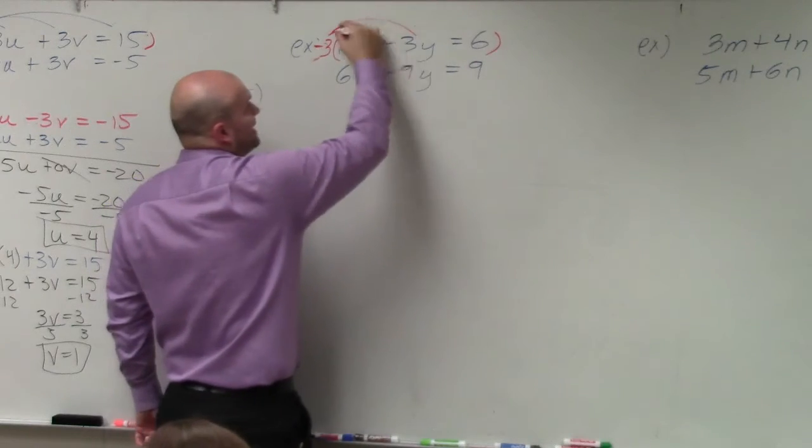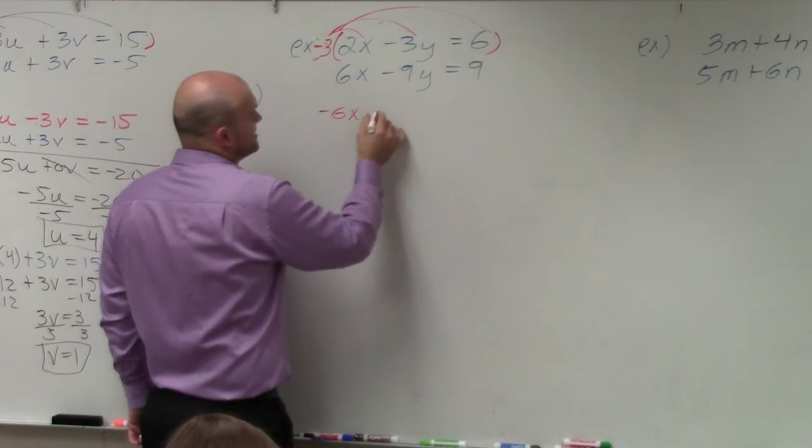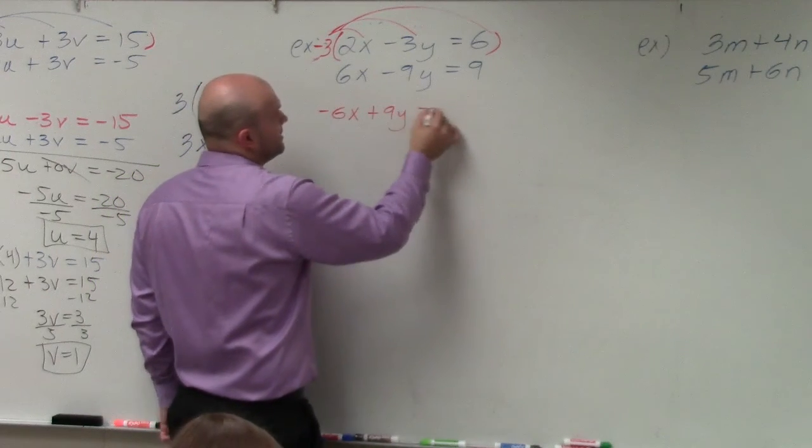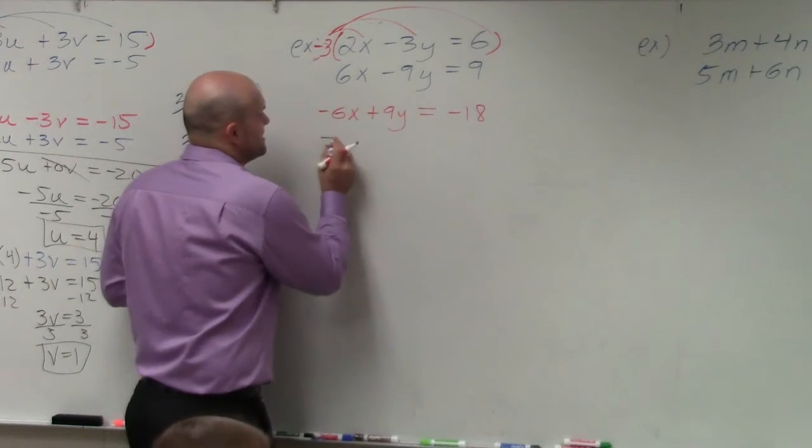Just make sure you multiply everything by negative 3. So when doing that, I get a negative 6x plus 9y equals negative 18. Then my bottom equation remains the same.